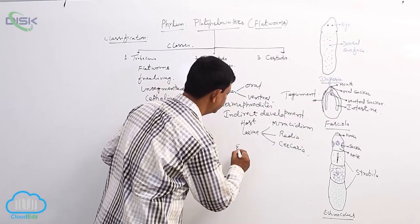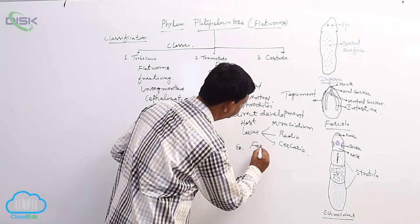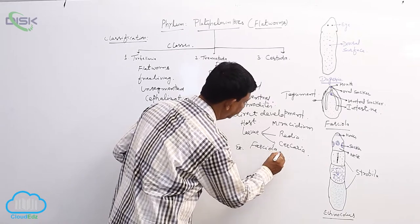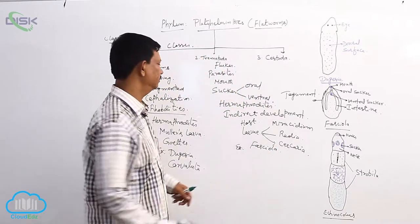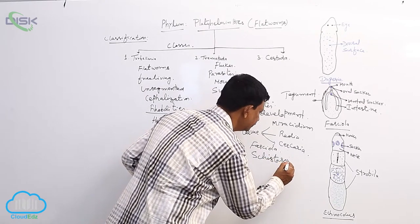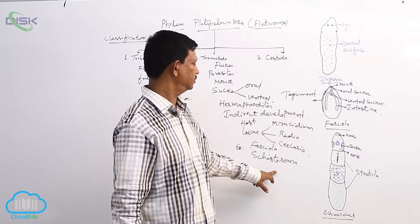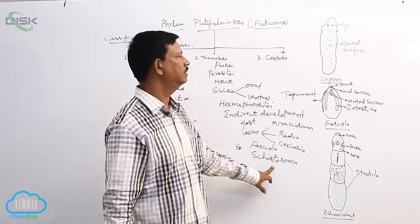Examples are Fasciola, it is commonly known as the liver fluke, and Schistosoma. It is known as the blood fluke found in the blood of host.